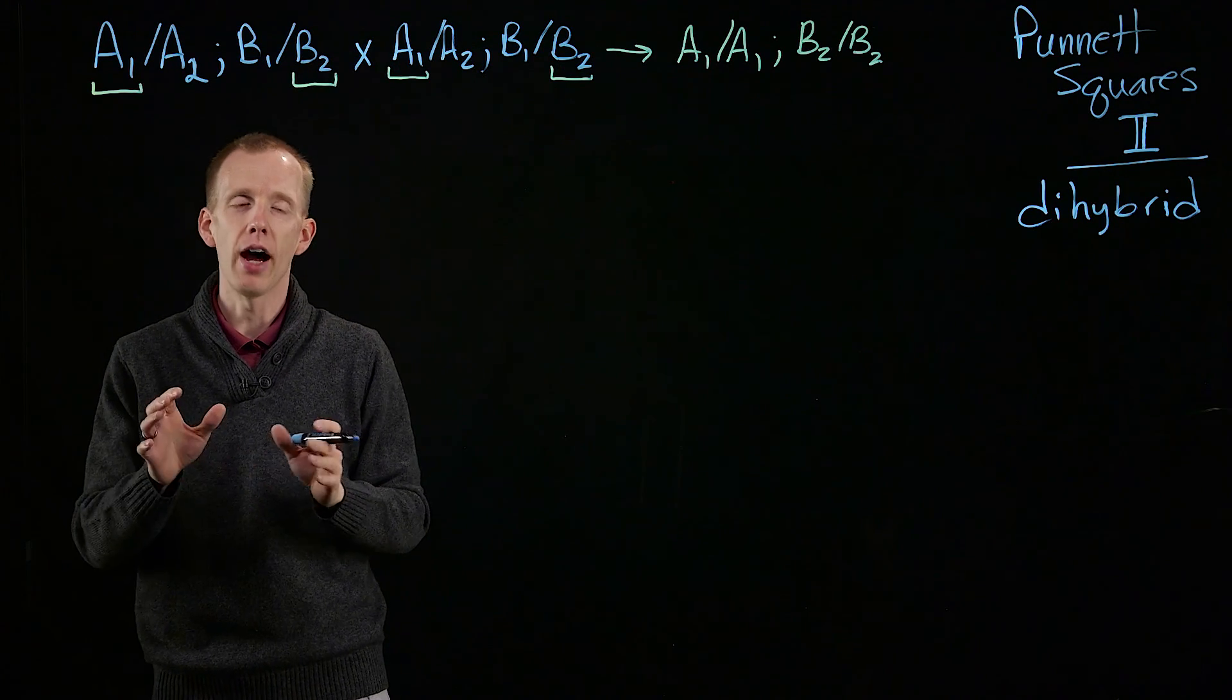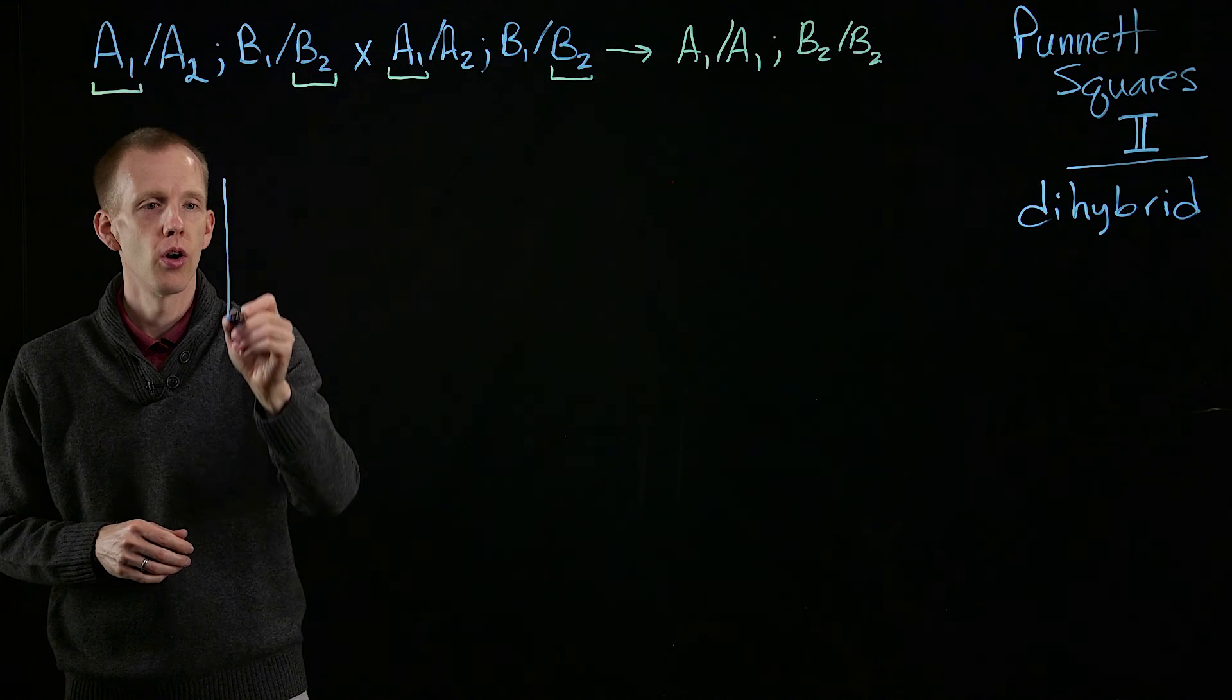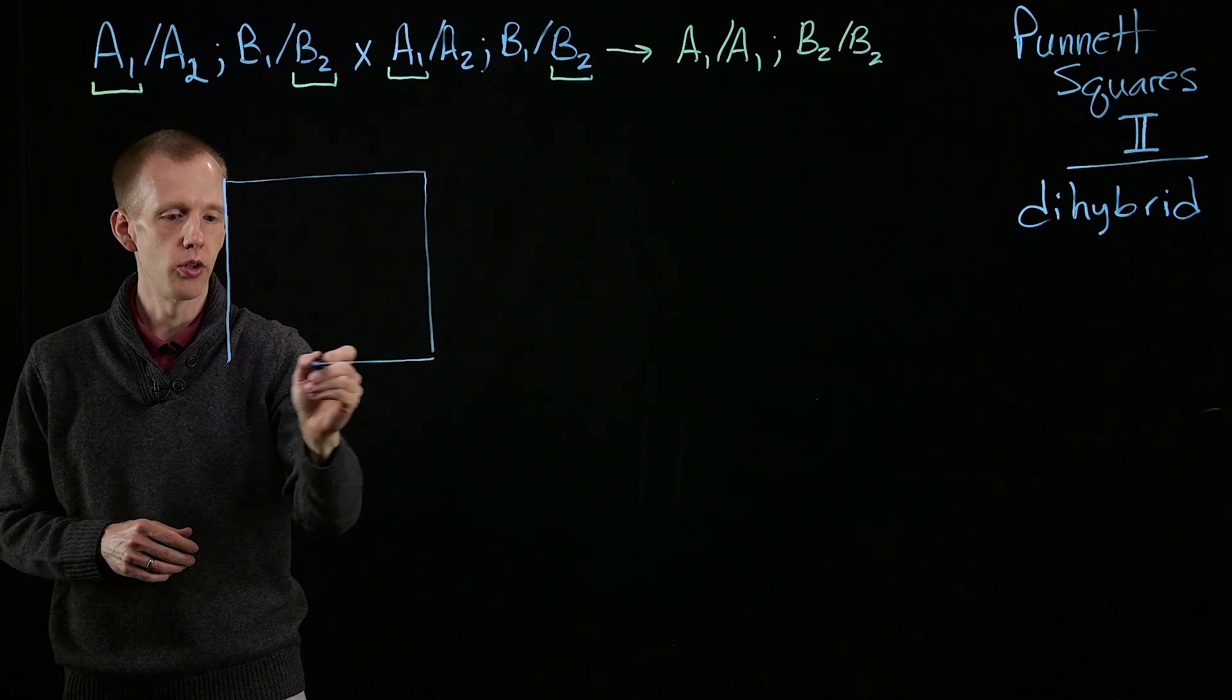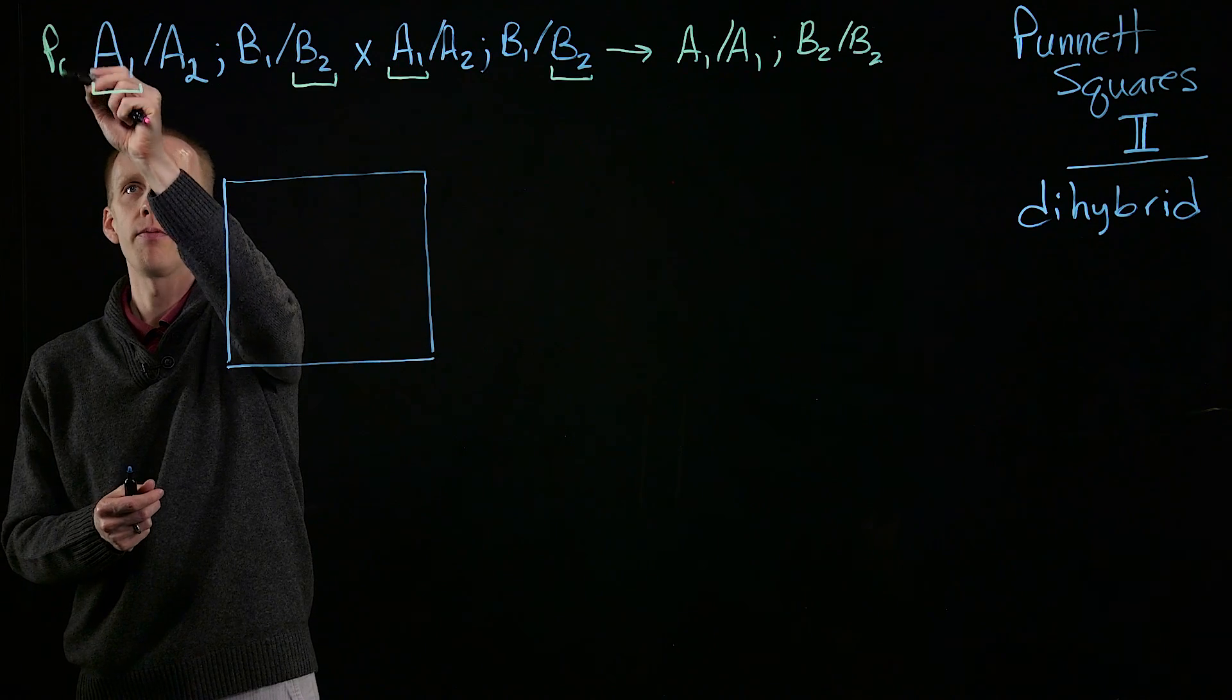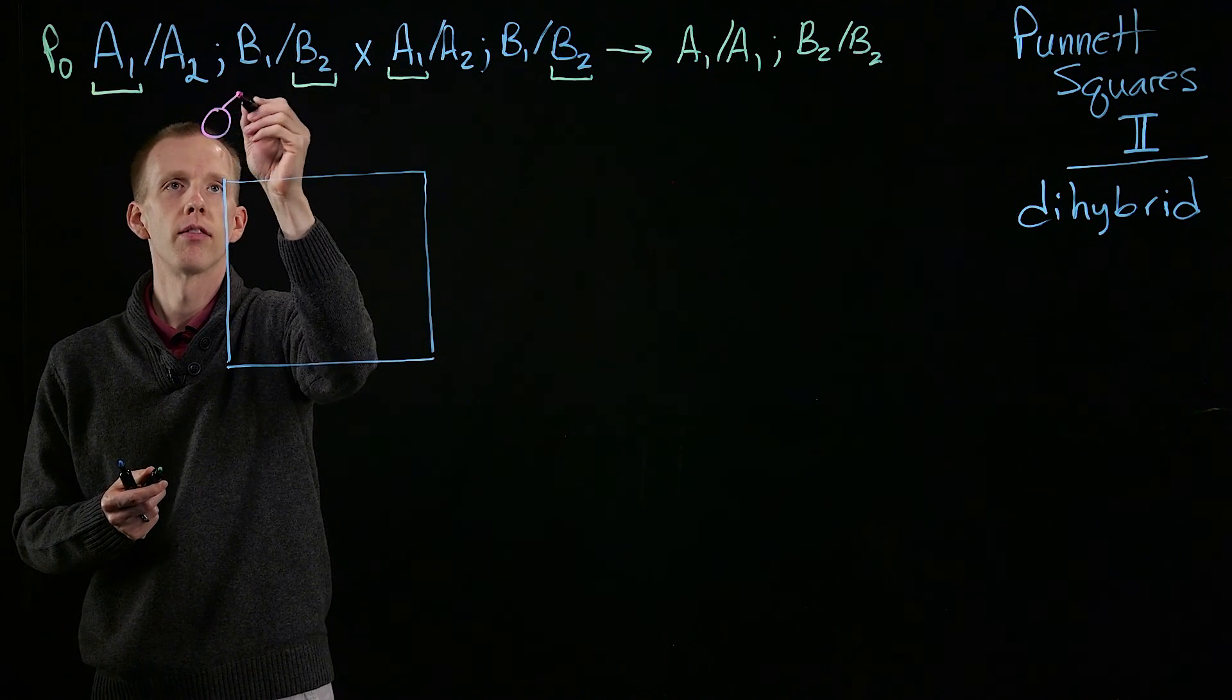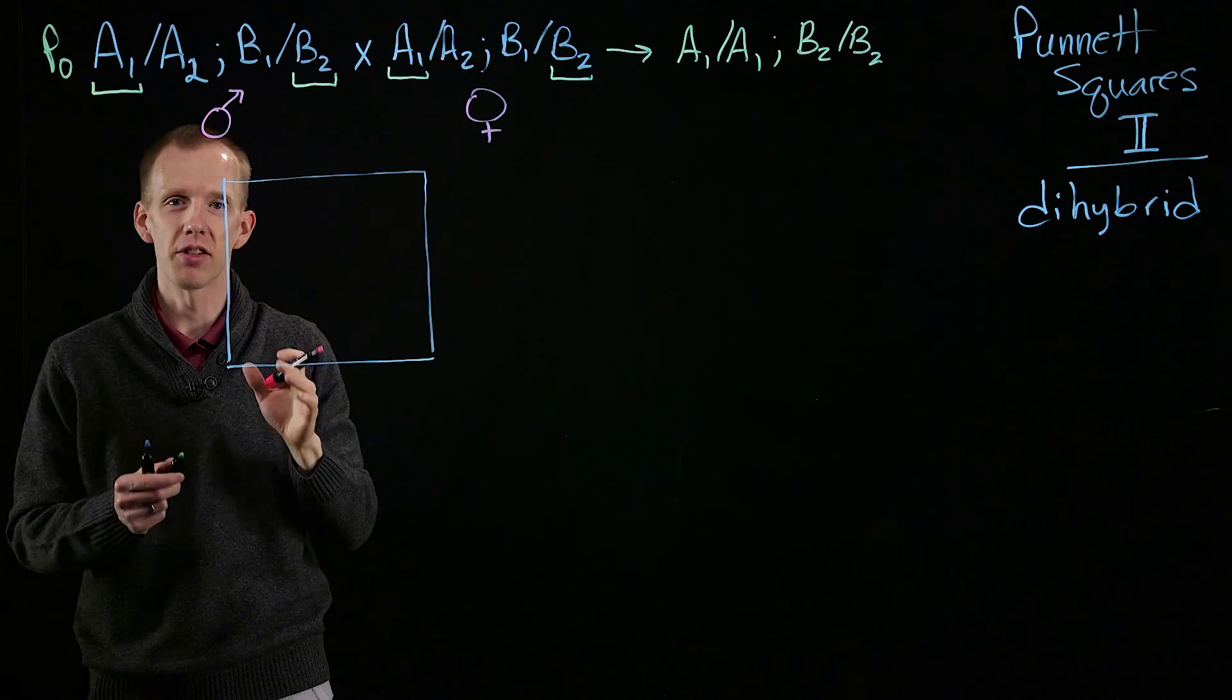So in this case, now we have a bit more work to do in terms of predicting what are the gamete haplotypes produced by dihybrid parents. So here's the P0 generation, and here's the dad, and the mom. It doesn't really matter which is which, since they both have the same genotype.